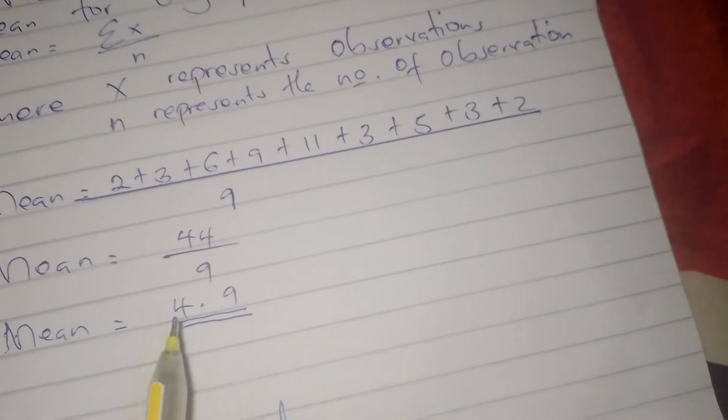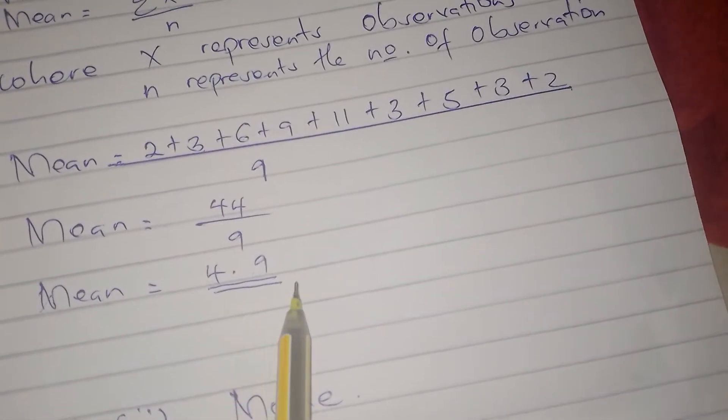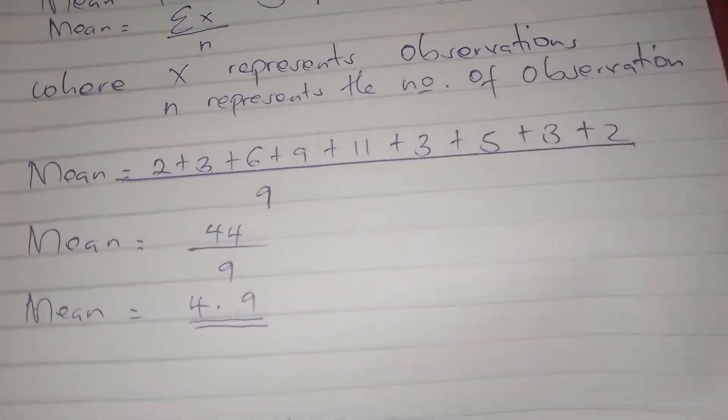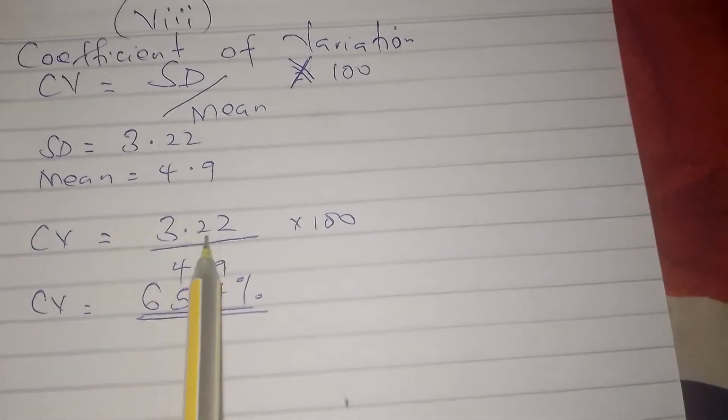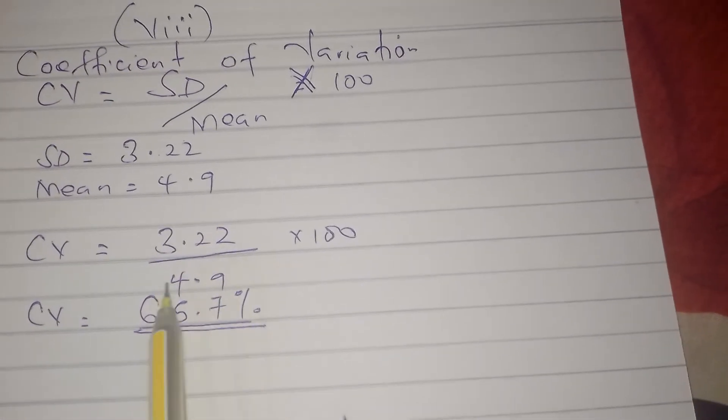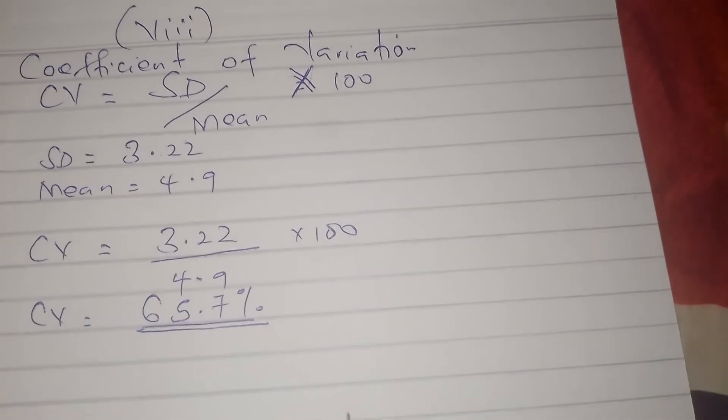Then we had calculated for mean, which is 4.9. Therefore, we are just going to substitute in here. 3.22 divided by 4.9 times 100, we get our coefficient of variation.